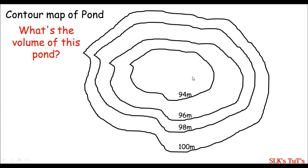This is the contour map of the pond because you can see the elevations of each line are gradually decreasing to inside, or you can say the elevations are increasing from inside to outside. That's why this is just like a pond. So my approach is to calculate the earthwork of a mountain or the volume of water in a pond.